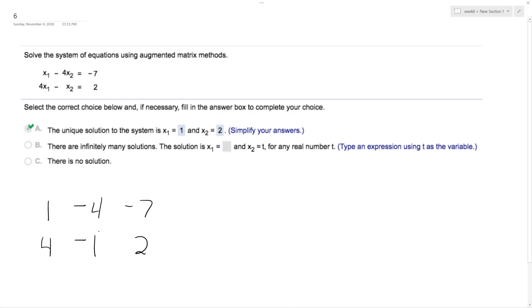So first thing I can do is I can take the second equation, or the second row, and multiply it by negative 4 and add it to the first row. So I'll end up with negative 15, 0, and negative 15.